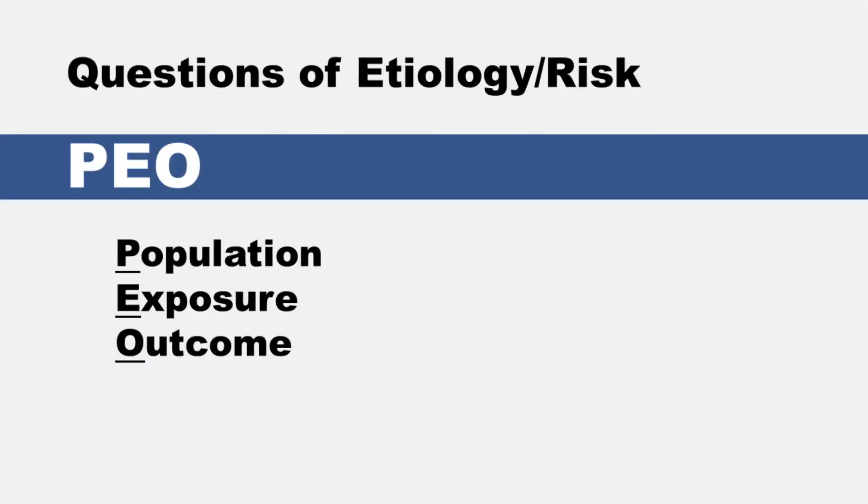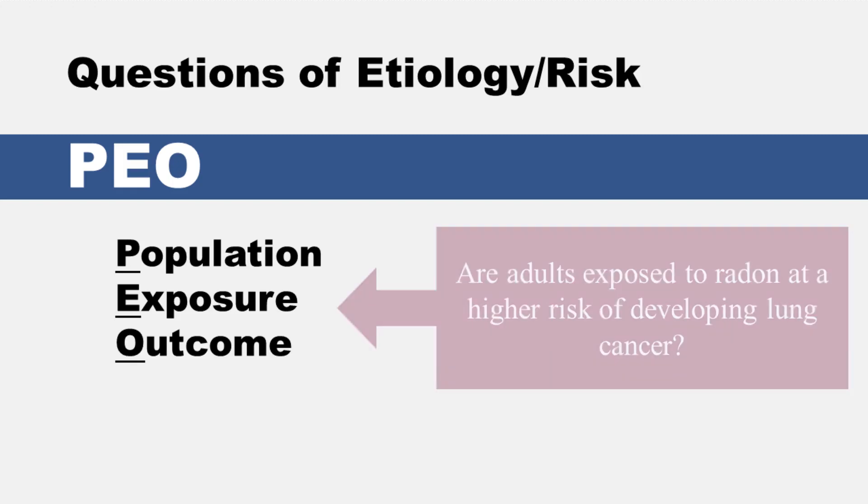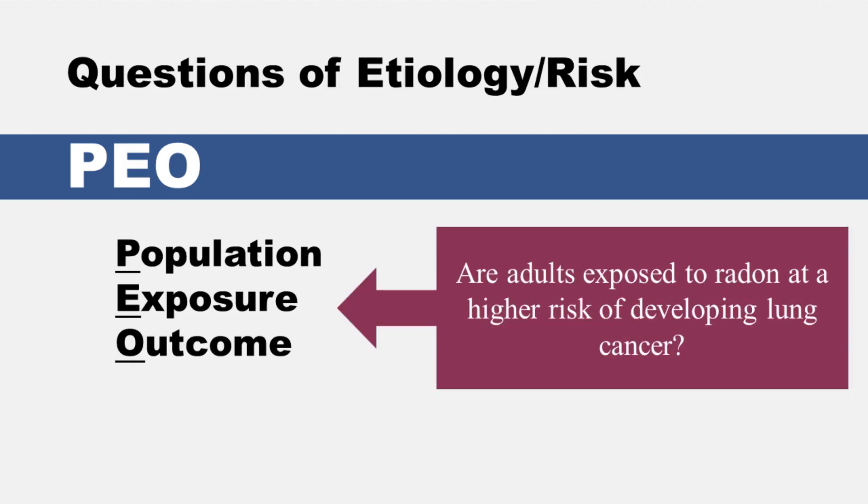The next question development framework is for questions of etiology and risk — PEO: population, exposure, and outcome. A sample topic might look like this: 'Are adults exposed to radon at a higher risk of developing lung cancer?'